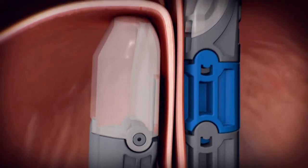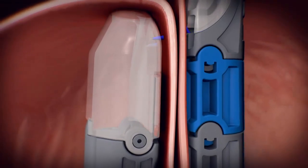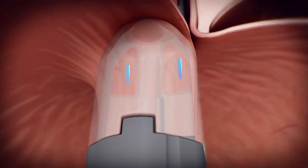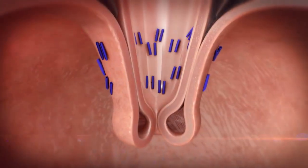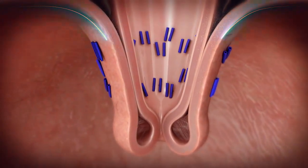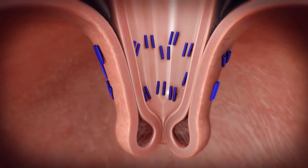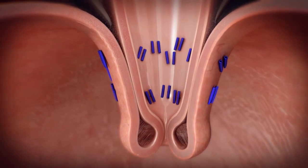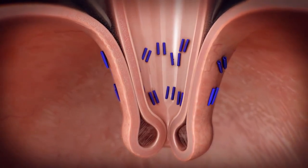Non-absorbable sutures are used to secure the fold. This process is repeated in specific locations to recreate natural functioning anatomy, thus reducing symptoms that interfere with a normal lifestyle. Approximately 20 sutures are placed during the procedure to recreate anatomy and help prevent stomach contents from refluxing up into the esophagus,